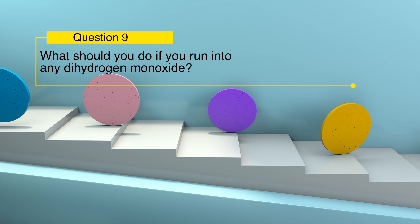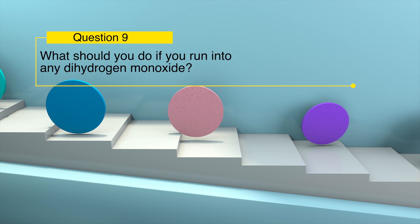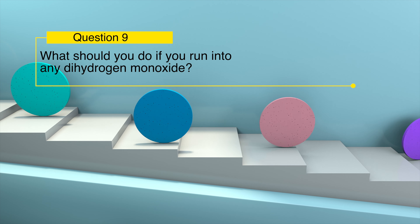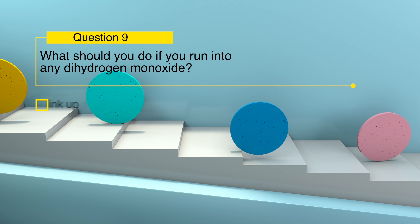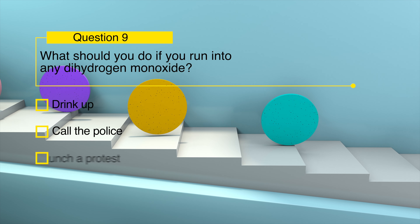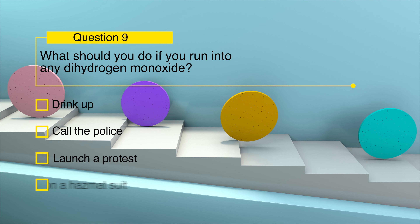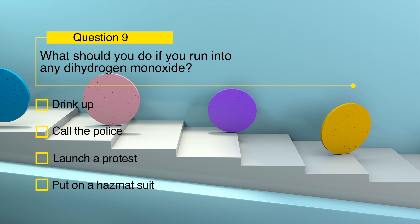What should you do if you run into any dihydrogen monoxide? Drink up, call the police, launch a protest, or put on a hazmat suit?